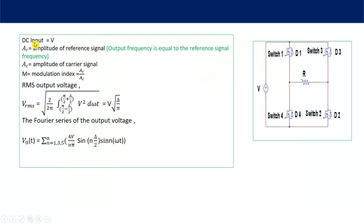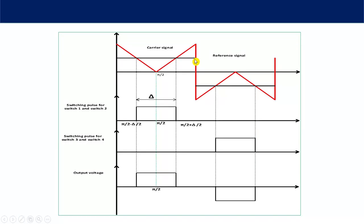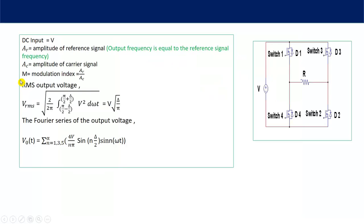Here, V is the DC input voltage, AR is the amplitude of the reference signal, and AC is the amplitude of the carrier signal. A modulation index is defined as M = AR / AC, indicating how much pulse width you have. When the peak of the reference equals the peak of the carrier, modulation index is maximum at 1. When the reference is reduced to zero, modulation index is 0. So the modulation index range is 0 to 1.